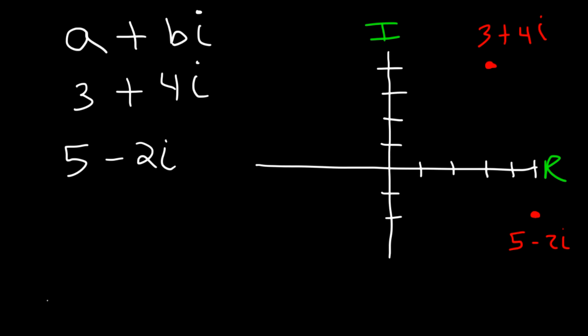And let's try one more example. Negative 3 plus 1i. So we need to go 3 units to the left and up 1. So this is negative 3, positive 1.